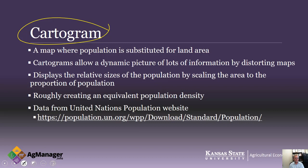The data is from the United Nations population website — the website is available if you want to take a look at it. There are historical aspects from 1950 to essentially 2019, and then from 2020 through 2100 the UN does population projections. We're using the medium variant; they also have a high and a low variant, but the medium variant hopefully represents the most expected outcome.